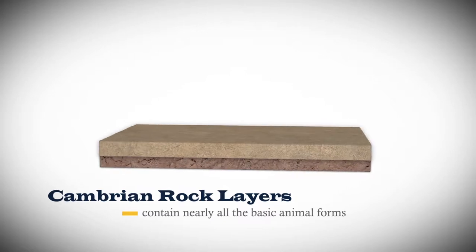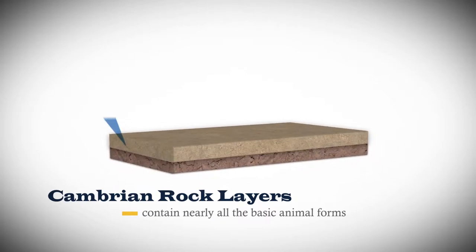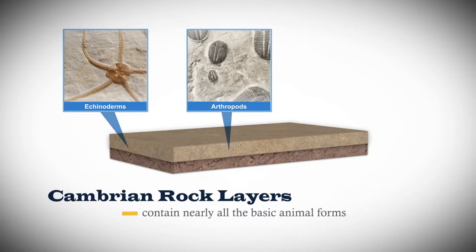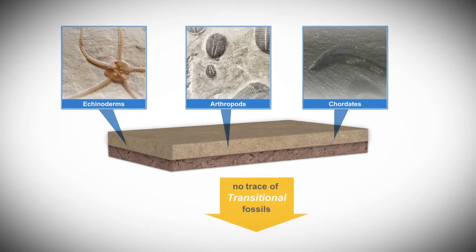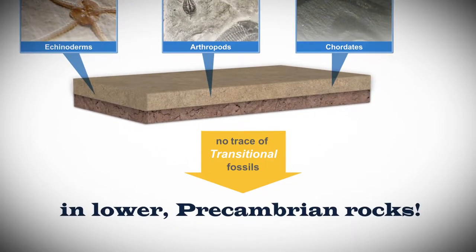Cambrian rock layers contain nearly all the basic animal forms, including echinoderms, arthropods, and even chordates, with no trace of transitional fossils in lower pre-Cambrian rocks.